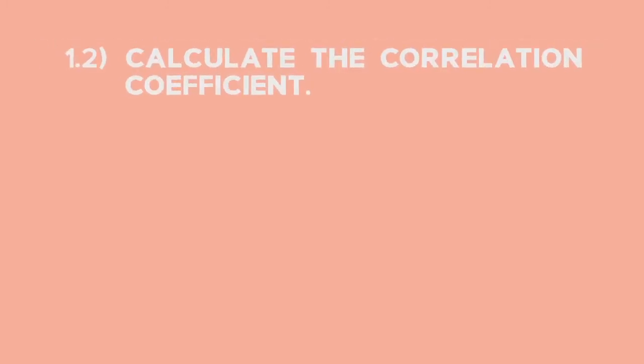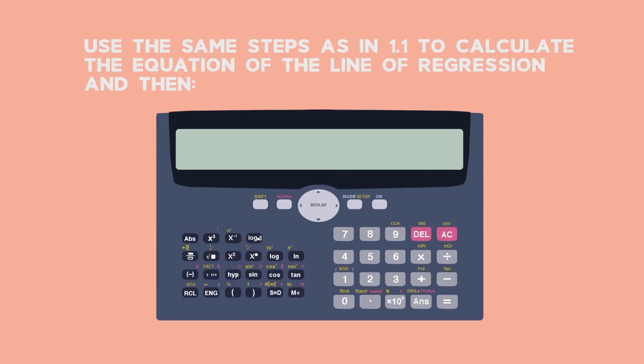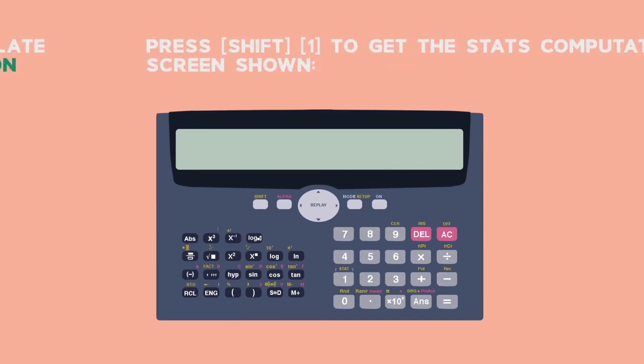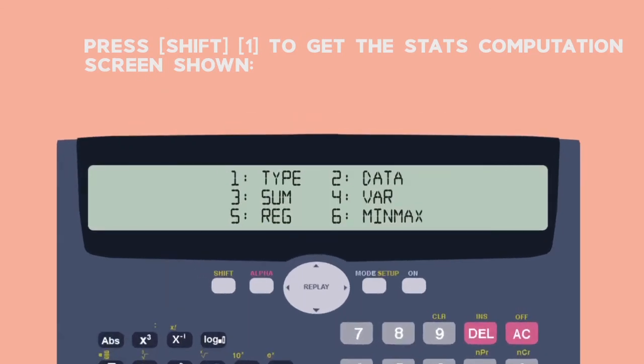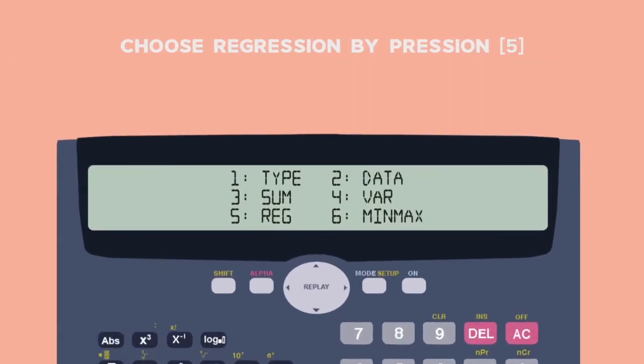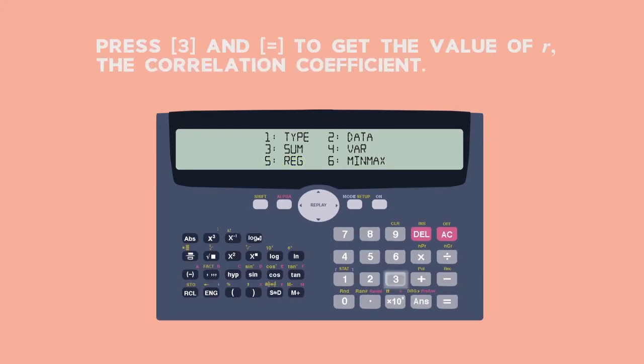For 1.2, get the value of the correlation coefficient from your calculator. Use the same steps as in 1.1 to calculate the equation of the line of regression and then press Shift 1 to get the Stats Computations screen shown. Choose Regression by pressing 5. Press 3 and equals to get the value of R, the correlation coefficient. The value of R is 0.92.